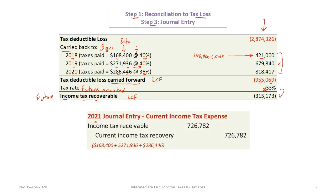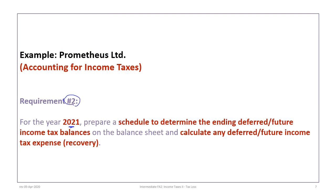We prepare the journal entry to record the current income tax recovery. The recoverable amount is the sum of taxes paid in the previous years: one hundred sixty-eight thousand four hundred plus two hundred seventy-one thousand nine hundred thirty-six plus two hundred eighty-six thousand four hundred forty-six equals seven hundred twenty-six thousand seven hundred and eighty-two. We debit income tax receivable — because the government will send you a check — and credit current income tax recovery.